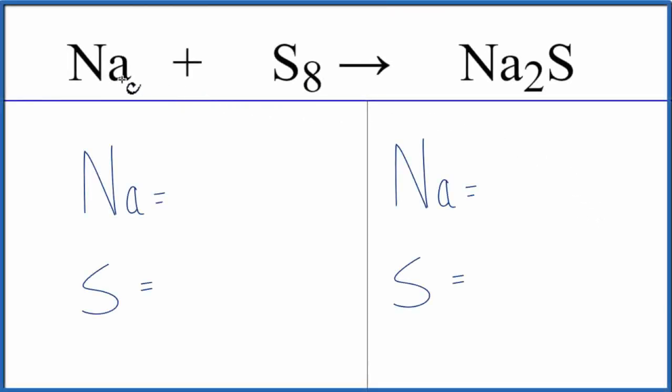In this video we'll balance the equation for Na plus S8 yields Na2S. Let's count the atoms up on each side of the equation. We have one sodium and eight sulfur atoms. On the product side we have two sodiums and one sulfur atom.